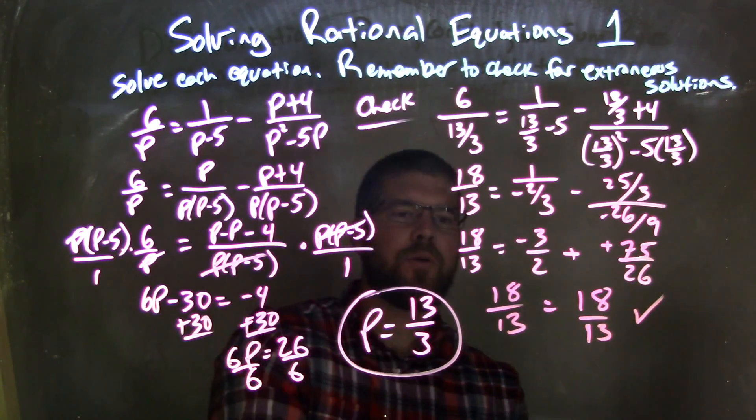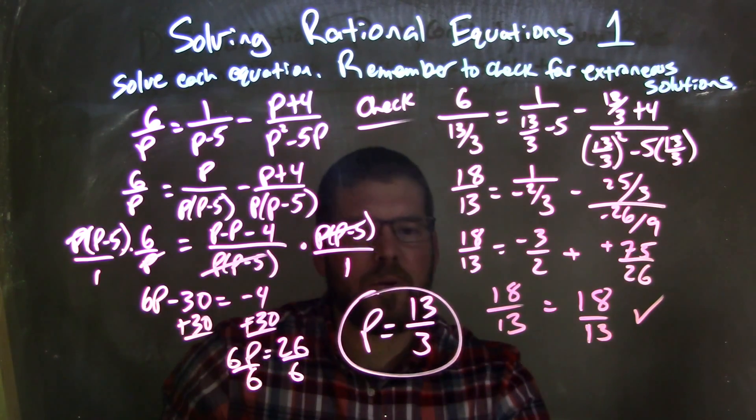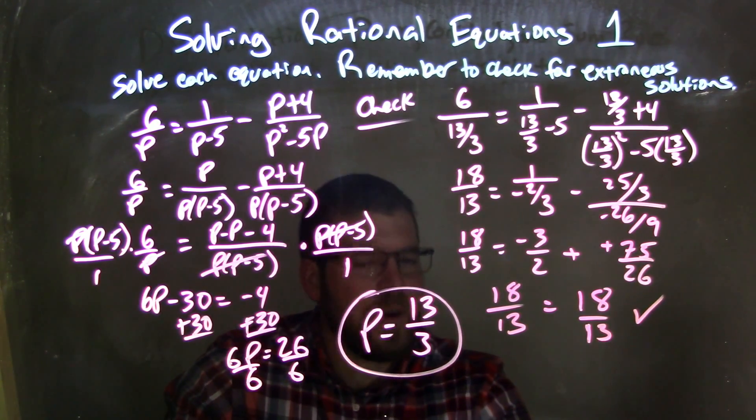And my left and right hand side were equal. Fantastic, confirming that p equals 13 over 3 is my final answer, not extraneous.